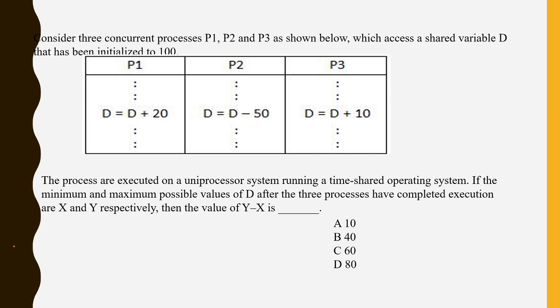This is a GATE previous year question. In this question, P1, P2, and P3 are three processes using the same variable D. The initial value of D is 100.